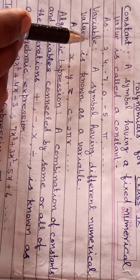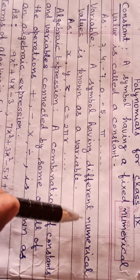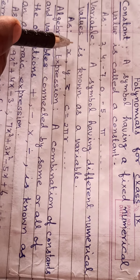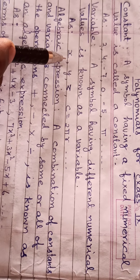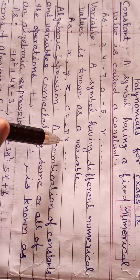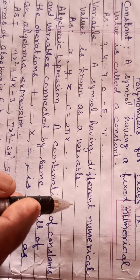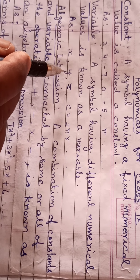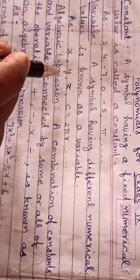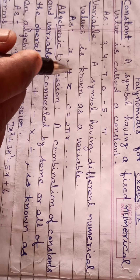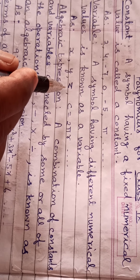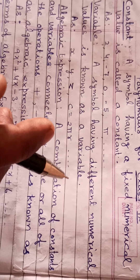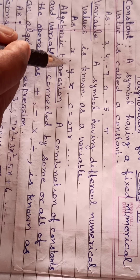Now, variable. A symbol having different numerical values is known as a variable — for example x, y, z. In the formula c equals 2 pi r, the value of x may be 1, 2, 3, 4, minus 1, and so on. Similarly, the value of y may be 2, 4, 6, 8 or minus 2, 4, 6, 8 and so on. Similarly for z. A symbol whose value is different at different places is called a variable.